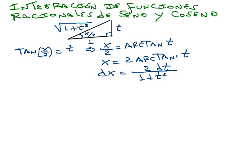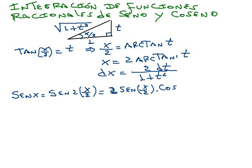Ahora voy a pasar a hallar las restantes funciones. Seno de x es lo mismo que seno de 2·(x/2), como estamos trabajando con ángulos dobles. Usando la identidad trigonométrica, seno de 2θ = 2·seno(θ)·coseno(θ), entonces tener esto en ángulos dobles es lo mismo que tener 2·seno(x/2)·coseno(x/2).